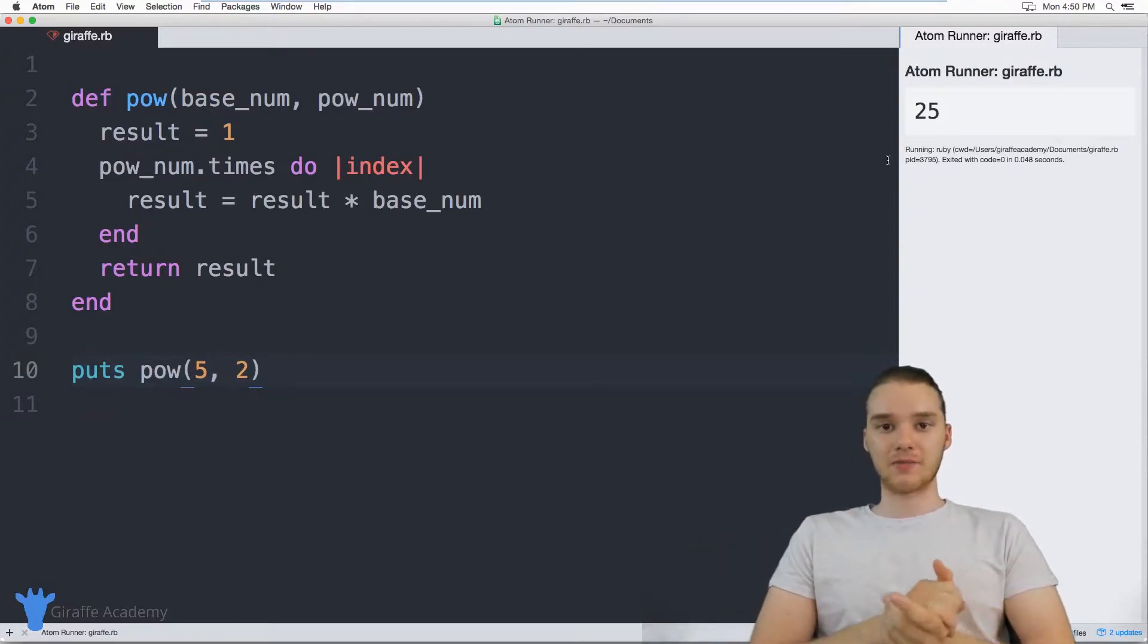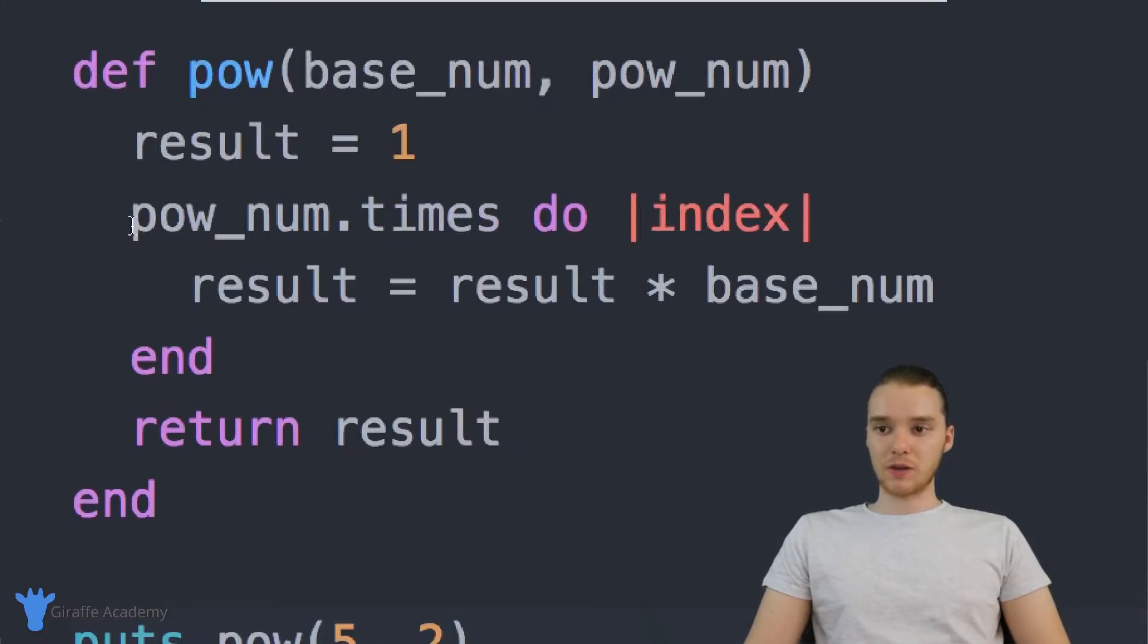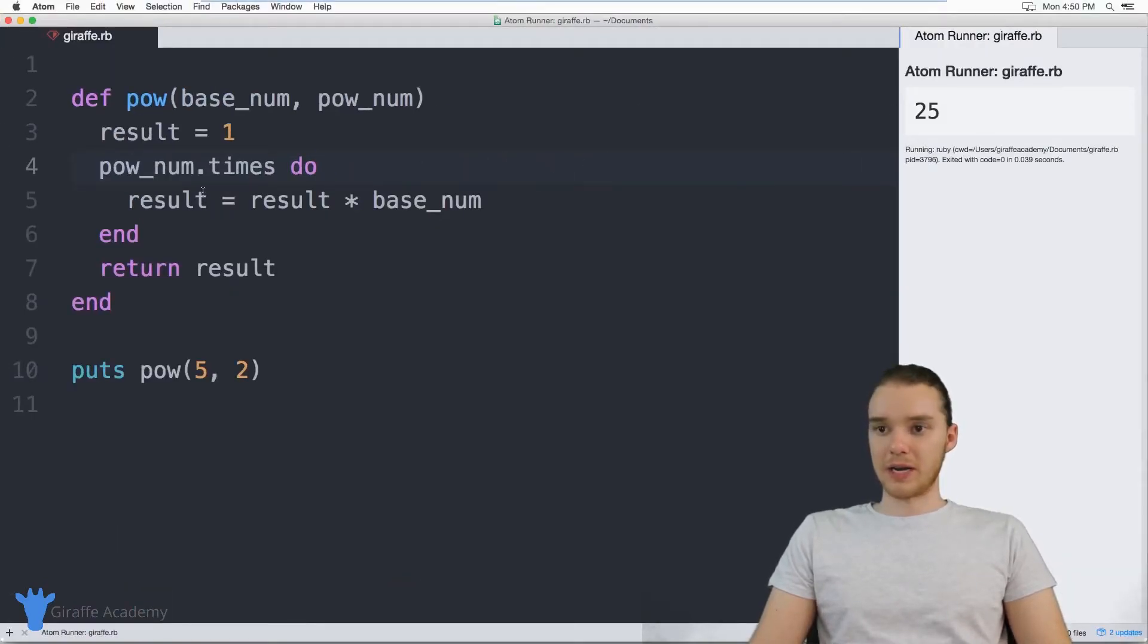So again, this is going to work for positive number exponents. Negative number exponents, this won't handle it. But for our purposes, this kind of demonstrates how we can use a little for loop, or in this case, we're just saying pow_num dot times, in order to loop through something a certain number of times. And this can be extremely useful when we want to do something like this. And also, I just want to point out over here, I had kind of stored this variable index. But you don't actually have to do that. And in this case, we don't need it inside of this method, but sometimes it's good to just have it there.